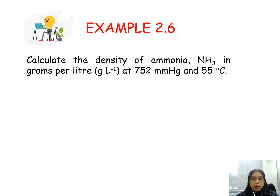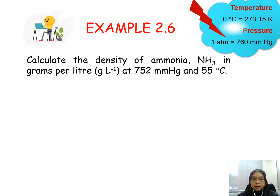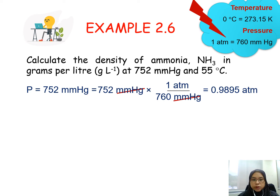Let's try example 2.6. Calculate the density of ammonia NH3 in grams per litre at 752 mmHg and 55 degrees Celsius. Remember we have to change the unit of pressure and temperature. To convert pressure: 752 mmHg times 1 atm over 760 mmHg gives us 0.9895 atm.